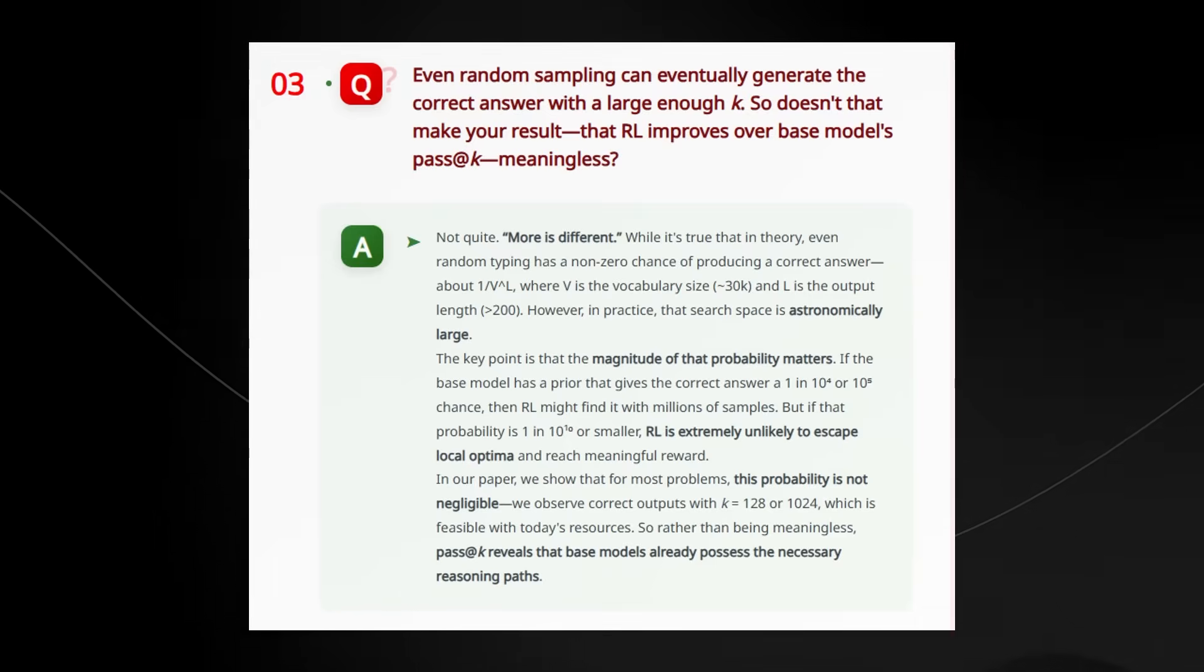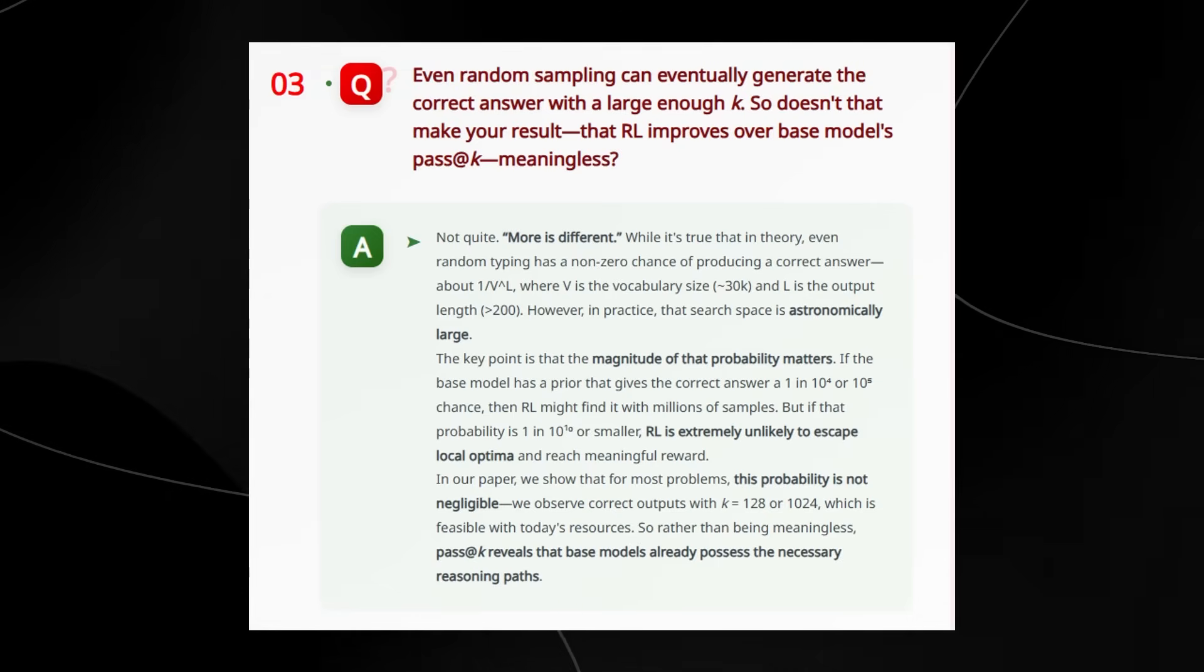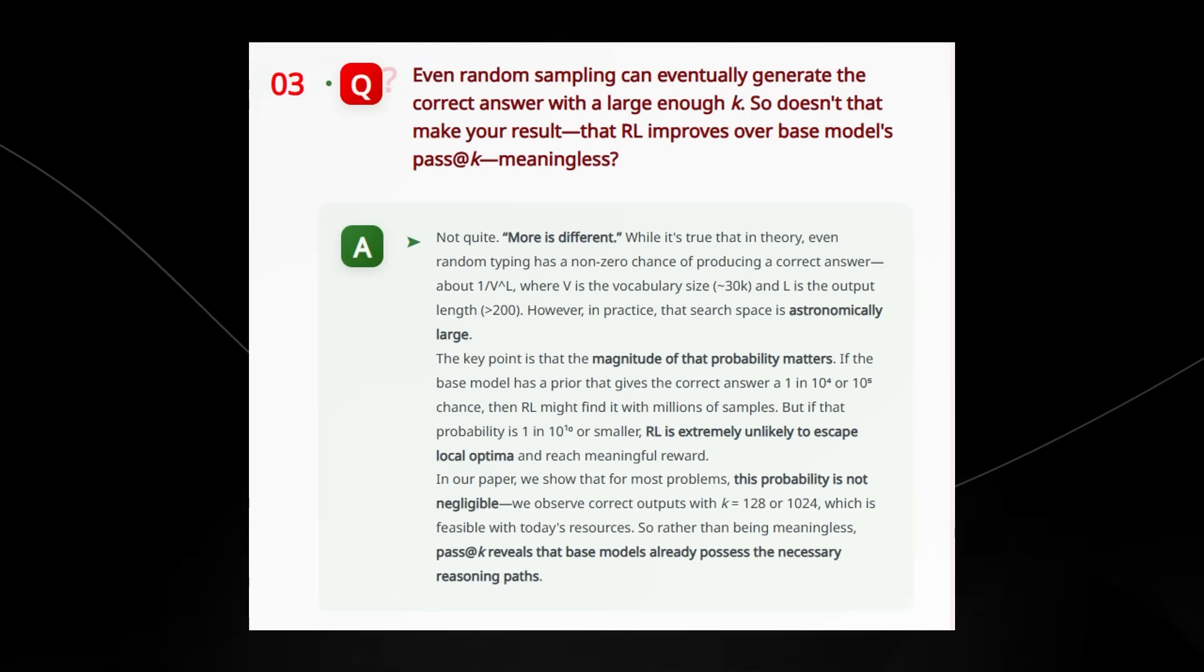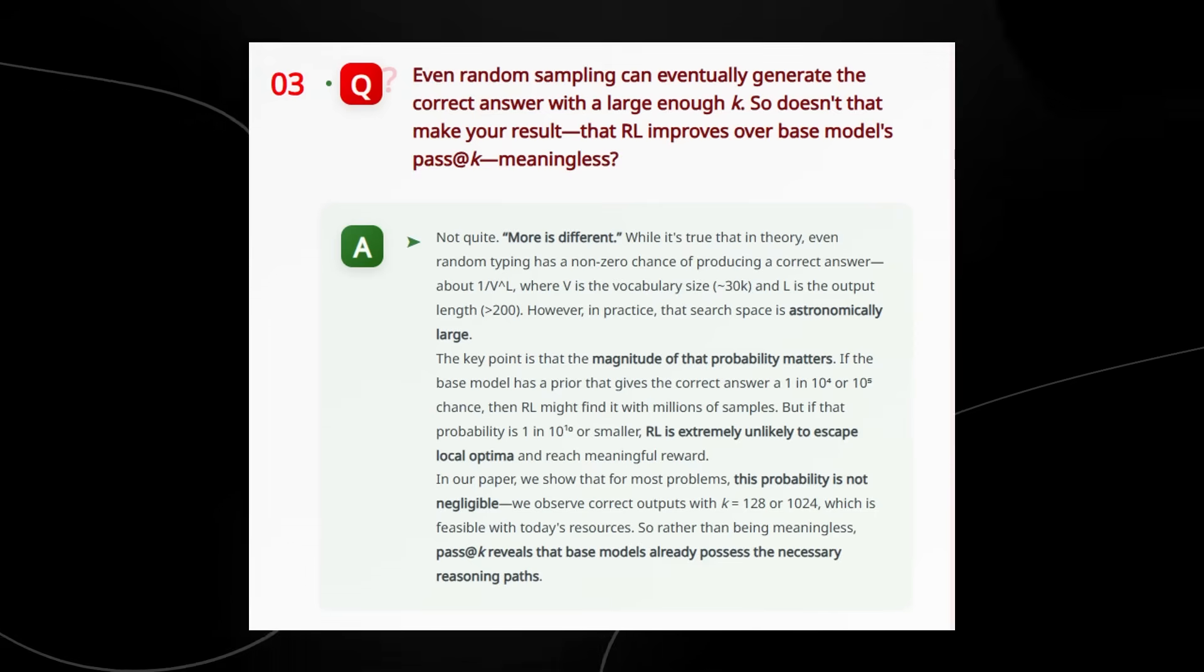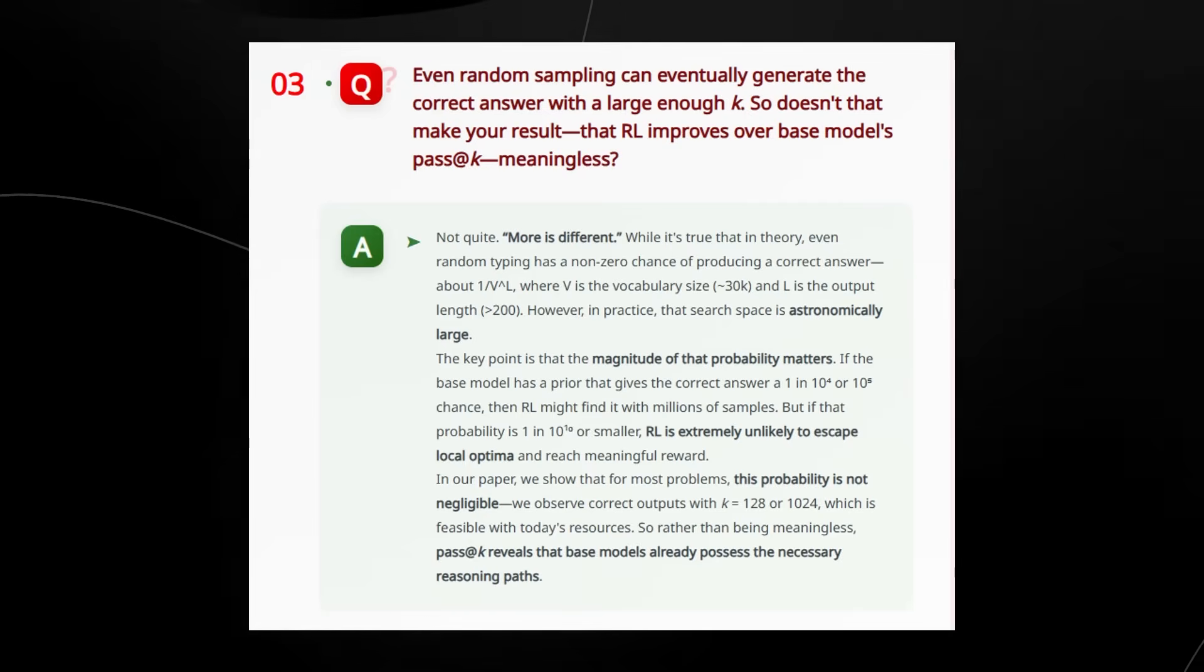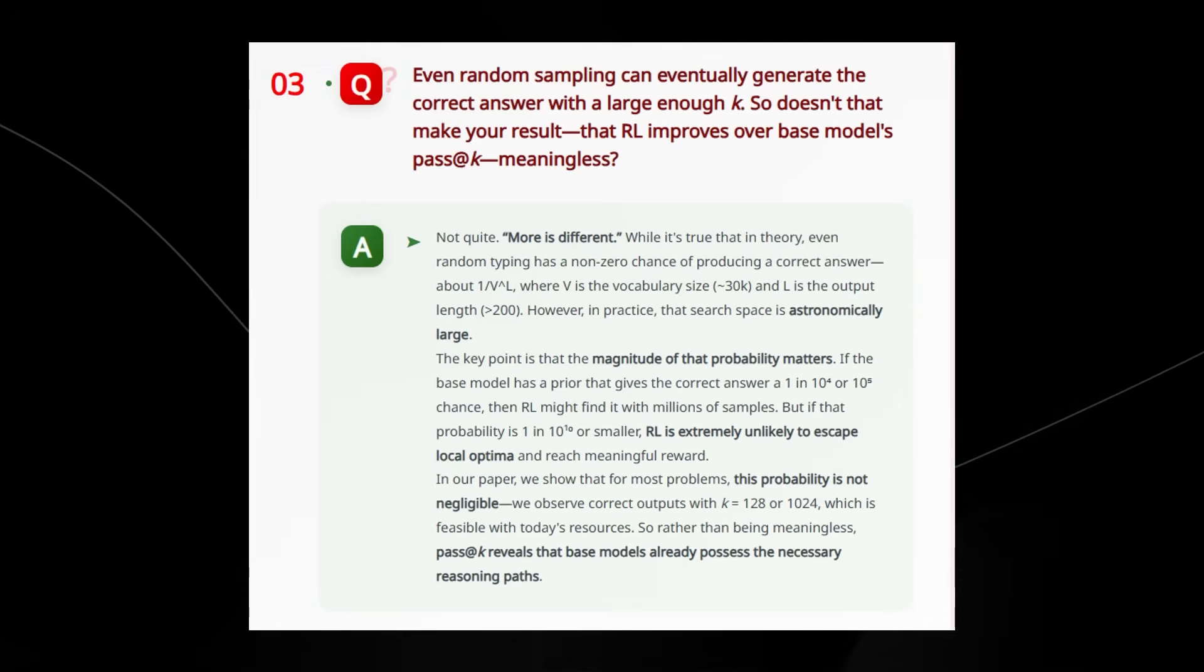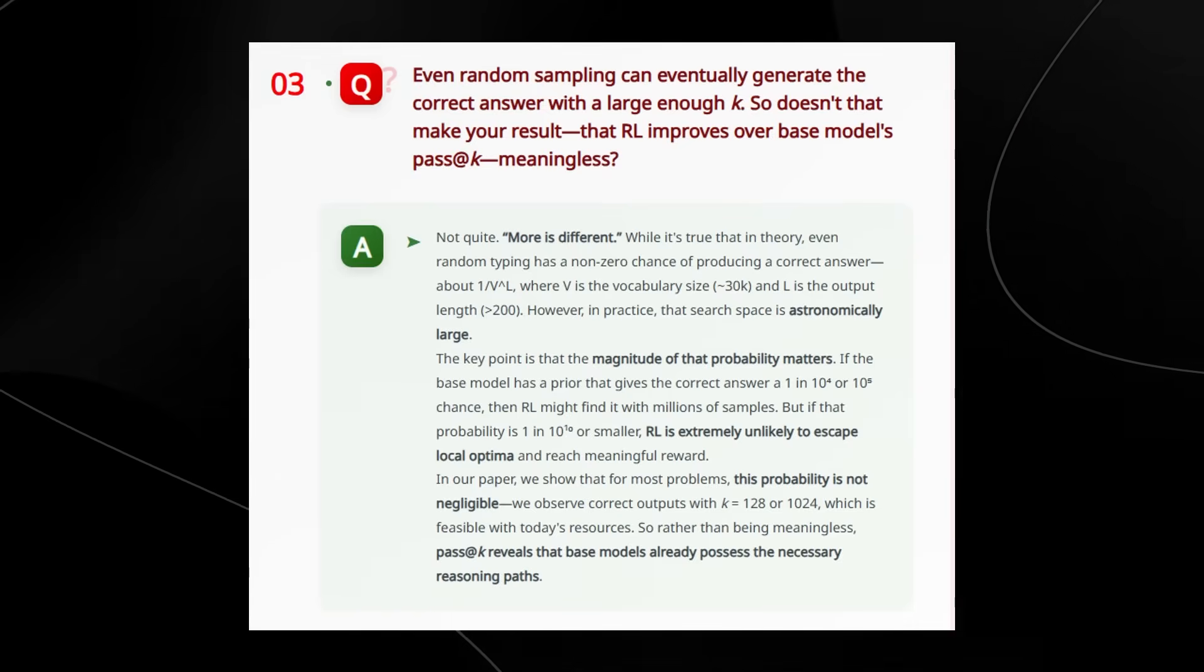And here they're also stating that even random sampling can eventually generate the right answer, so doesn't that make your result meaningless? Yes, in theory, typing randomly could land a correct answer eventually, but the chance of that happening is nearly impossible. Pure randomness is not what's powering those correct answers. The real insight is basically saying the paper isn't saying keep sampling forever and eventually you'll get lucky. The paper basically says that if a model can get the right answer in 128 to 1024 tries, it means that the model already knows the reasoning path, and it means that it's not just luck, it's a hidden skill in the base model.